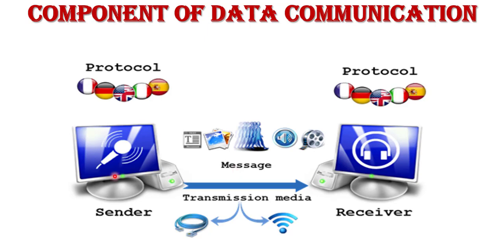The next component is sender — a sender is any device that is capable of sending the data or message. The next component is receiver — the receiver is a device to which the sender wants to communicate the data or message. Transmission media is the path by which the message travels from sender to receiver. It can be wired or wireless. Examples of wired transmission media are optical fiber cable, coaxial cable, and copper wire cable.